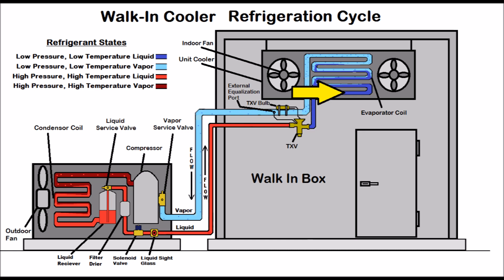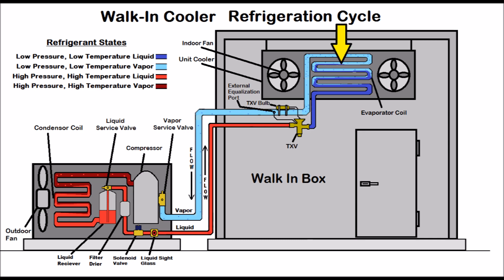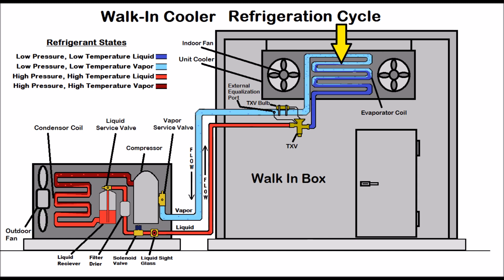As it heads into the evaporator coil it absorbs heat from inside the walk-in box. As it absorbs heat, the liquid refrigerant increases in temperature and turns into the saturated state where liquid and vapor both exist. That's where most of the heat is being absorbed. Once the refrigerant absorbs enough heat while maintaining the same temperature, it turns into a complete vapor, then continues increasing in temperature as it exits the evaporator coil. That temperature difference between where it becomes a complete vapor and where it exits the evaporator coil is called superheat — which is why the TXV bulb and external equalization port are mounted on the suction line right after the evaporator coil.